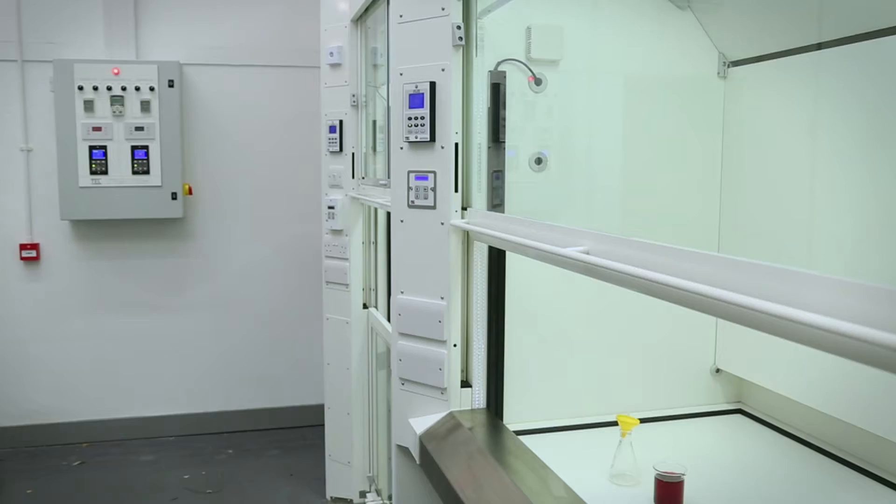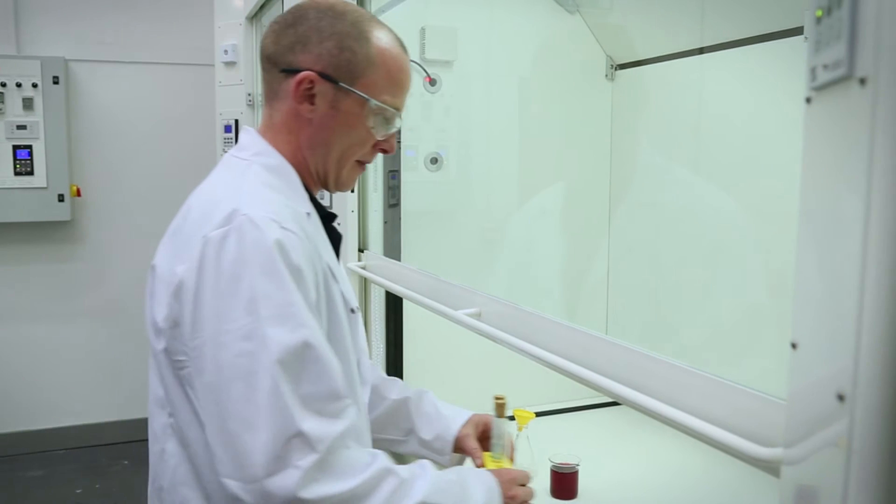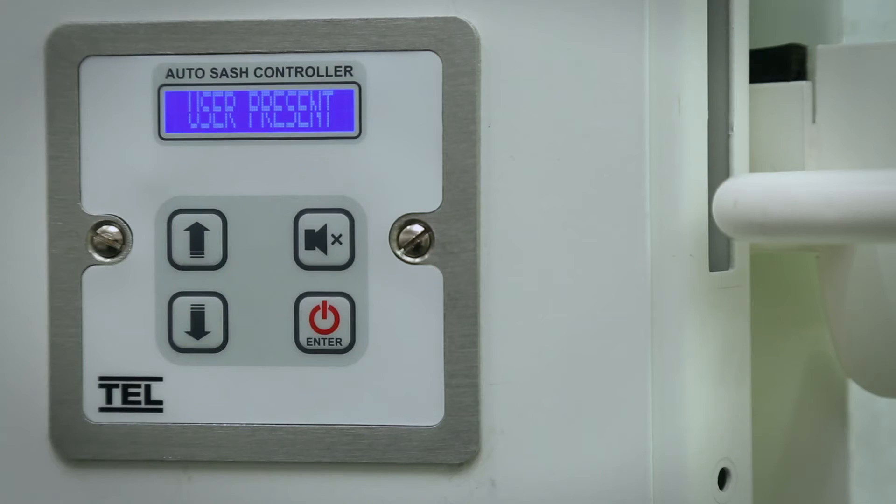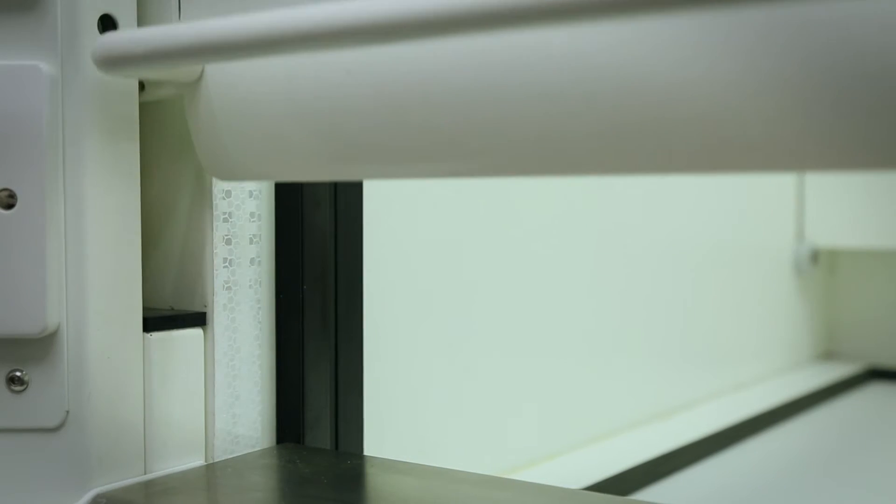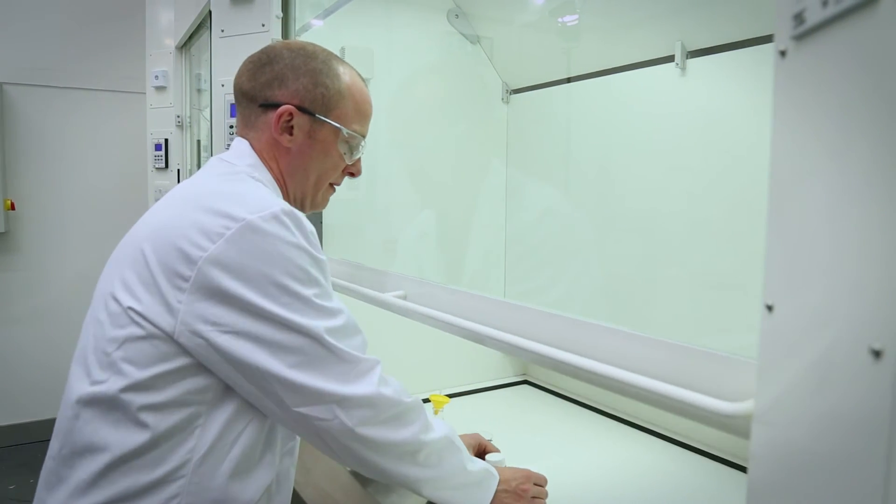The auto sash will automatically stop closing if a user is detected during the closing cycle. The sequence is reset once the user walks away. The auto open function will automatically open the sash when the user returns to the fume cupboard.